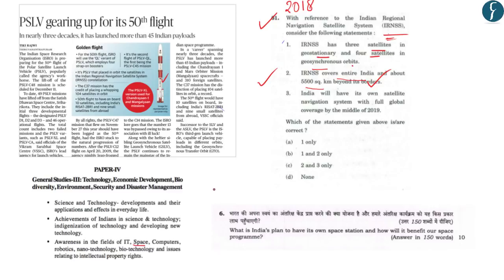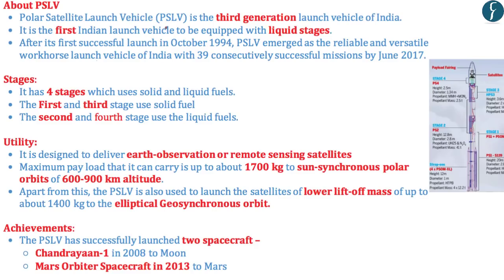In 2019, GS3 question number 6 asked about India's plan to have its own space station and how it will benefit the space program. We will start by understanding what PSLV is and its various components, and since PSLV is used to launch low Earth orbit satellites, we will also look at polar orbits and sun-synchronous orbits. PSLV is not the first but the third generation launch vehicle developed by India.